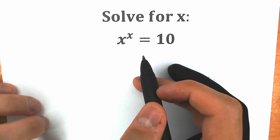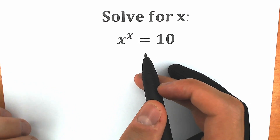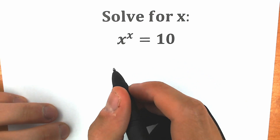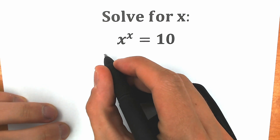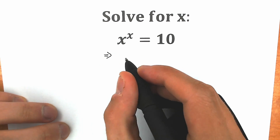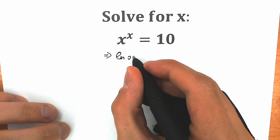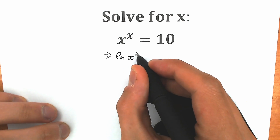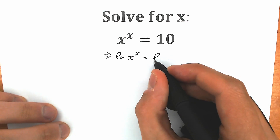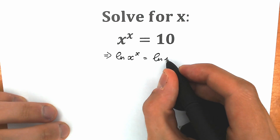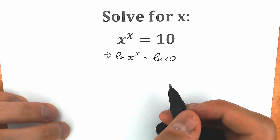So x to the power x equals 10. First of all, let's apply natural log on both sides and see what will happen. We're going to apply natural log on the left side — we have natural log of x to the power x — equal to natural log of 10. We apply natural log on both sides.